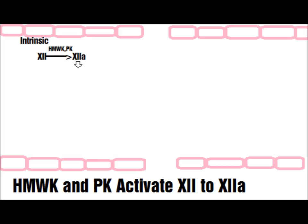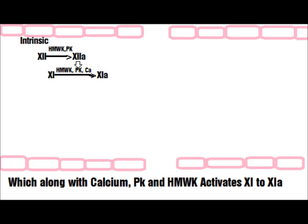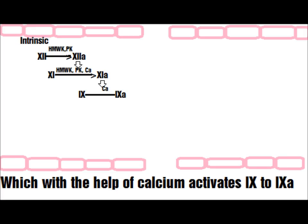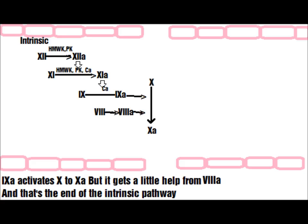The Intrinsic Pathway: HMWK and PK activate Factor 12 to 12A, which along with calcium, PK, and HMWK activates Factor 11 to 11A, which along with the help of calcium activates Factor 9 to 9A, and 9A activates Factor 10 to 10A.